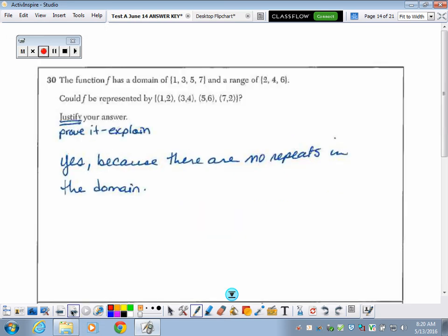Moving on to number 30. The function f has a domain value, so these are our x values, and a range value of 2, 4, and 6. Could f be represented by these ordered pairs? Justify your answer. That means prove it, explain it. It's really simple. Yes, because there are no repeats in the domain. You can have a function whenever you have no repeats in your domain.